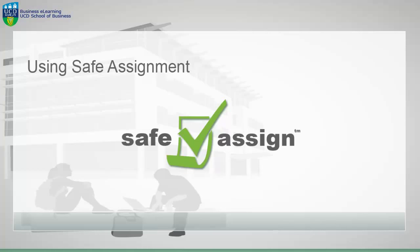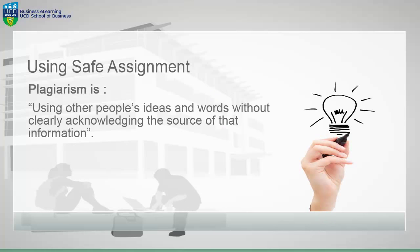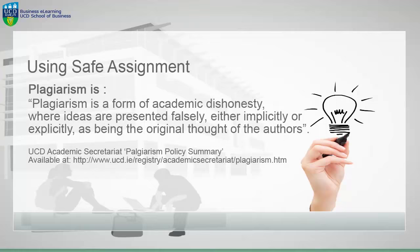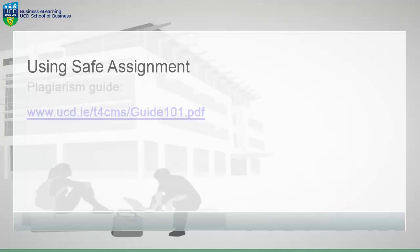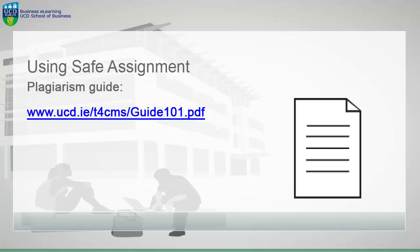To understand what SafeAssign is used for you must first understand what plagiarism is. Plagiarism is using other people's ideas and words without clearly acknowledging the source of that information. Plagiarism is a form of academic dishonesty where ideas are presented falsely, either implicitly or explicitly as being the original thought of the authors.